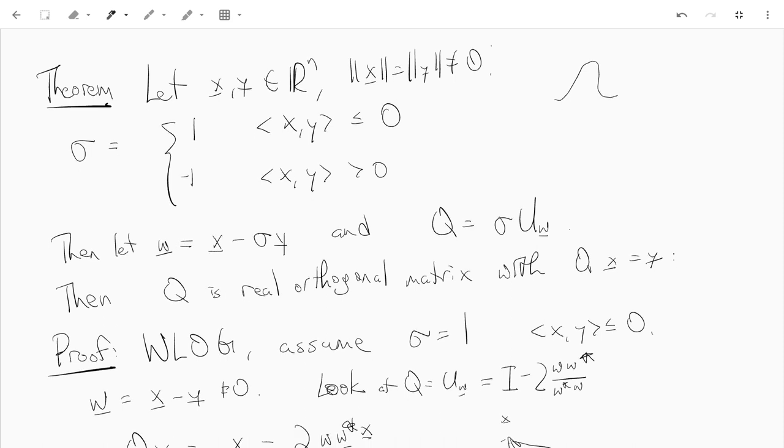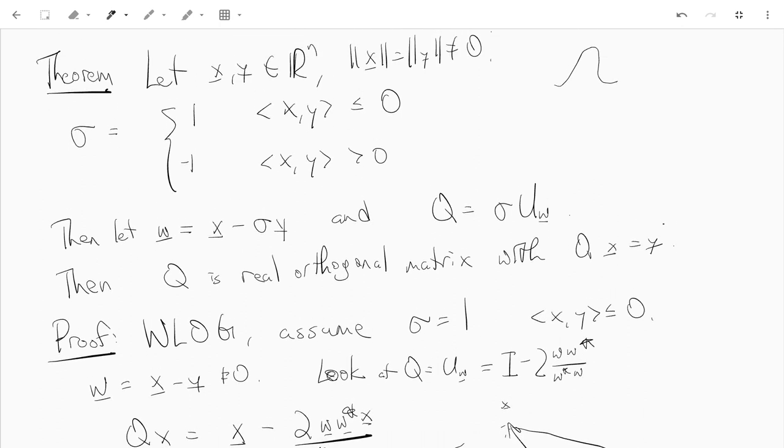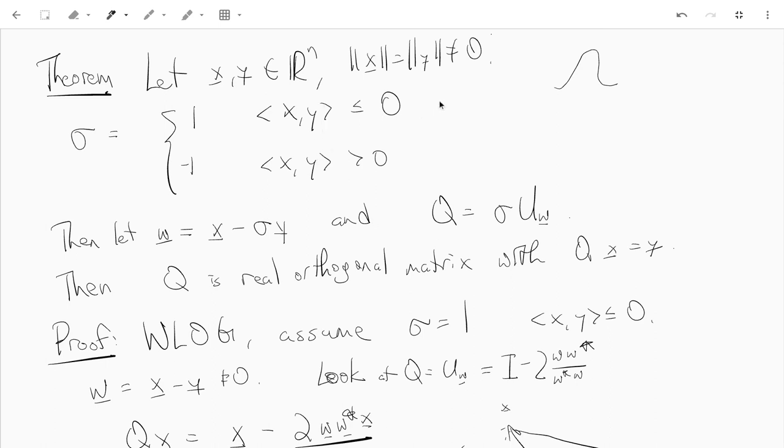So we're trying to find a real orthogonal matrix that transforms x into y. To prove this in the first step, we may as well assume we're in the case that the dot product of x and y is less than or equal to zero. If the dot product of x and y is positive, we can just replace x with negative x. And then sigma will be one instead of negative one.